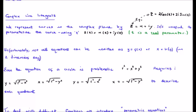Our first port of call are complex line integrals. When we move from the real axis to the complex plane, we denote all points as z — this is the complex number z, which is x, the real component, plus i times y, the imaginary component. For example, if z is 2 cosine t plus i sine t, then 2 cosine t is the real component and 2 sine t is the imaginary component. I'm using t, which I'll explain shortly.